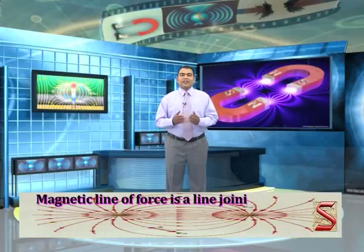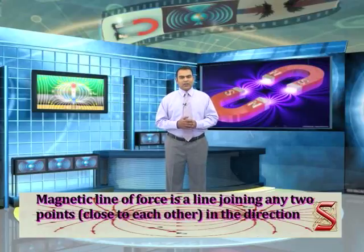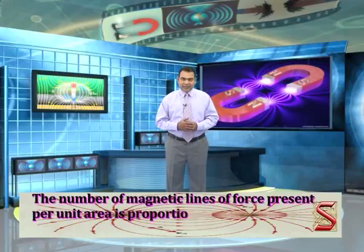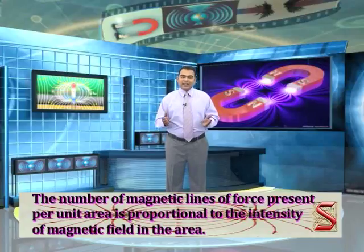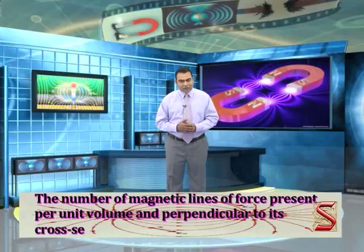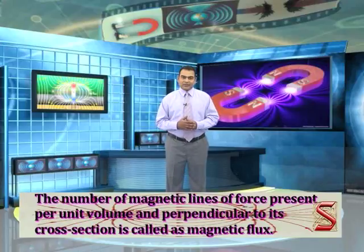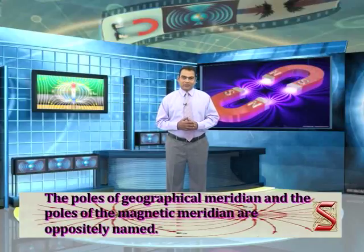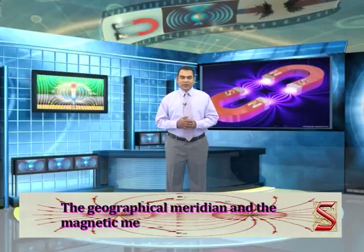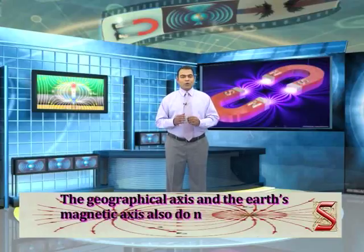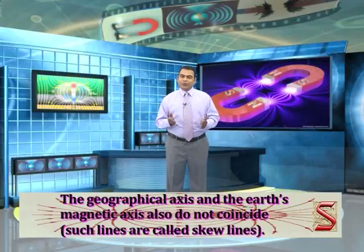A magnetic line of force is a line joining any two points close to each other in the direction of the magnetic field. The number of magnetic lines of force per unit area is proportional to the intensity of the field. The number per unit volume perpendicular to its cross section is called magnetic flux. The poles of the geographical meridian and the magnetic meridian are oppositely named, and the geographical axis and earth's magnetic axis do not coincide — such lines are called skew lines.